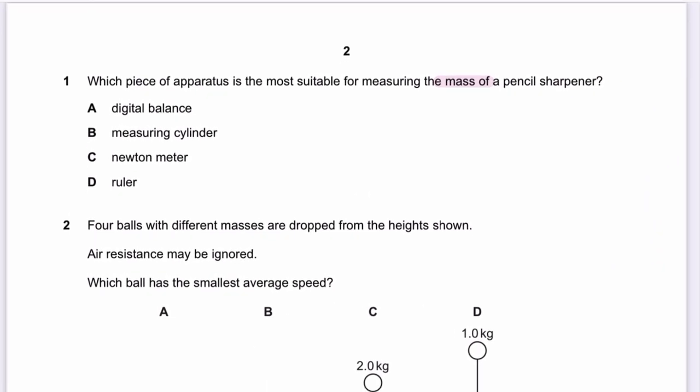Question 1: Which piece of apparatus is most suitable for measuring the mass of a pencil or sharpener? Whenever we're talking about mass, it will be either a digital balance or a physical balance — anything that measures mass in kg or grams. A measuring cylinder measures volume of liquid, a newton meter measures force, and a ruler measures length.